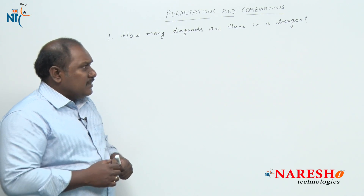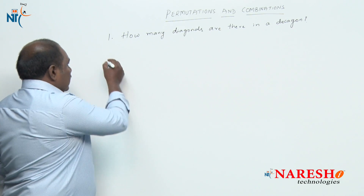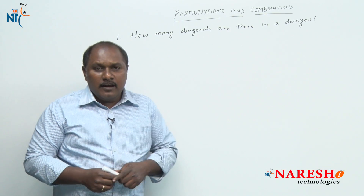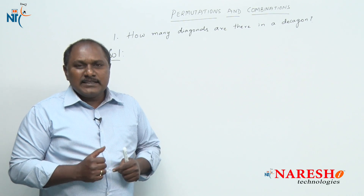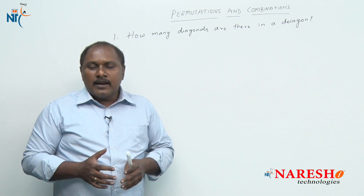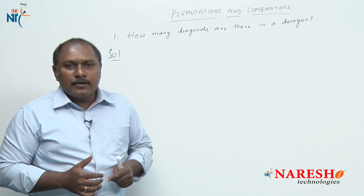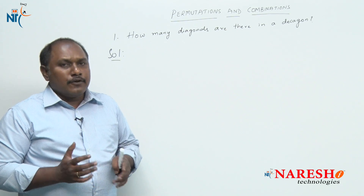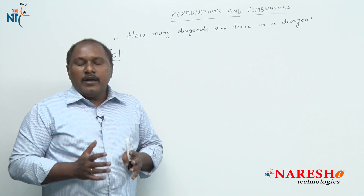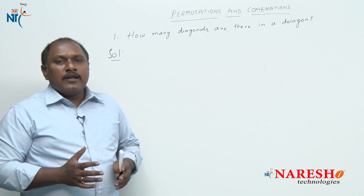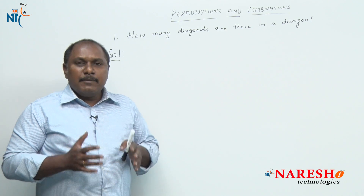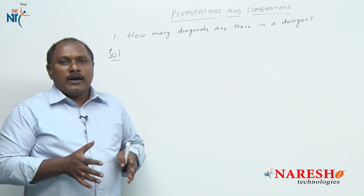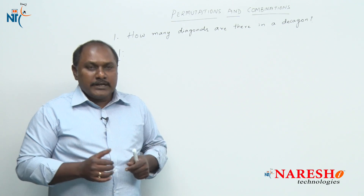There are different ways to answer this question. Let us look into the basics. A triangle is a polygon with three sides — to draw a triangle, we require three non-collinear points. Similarly, a quadrilateral is a polygon with four sides, requiring four non-collinear points. Likewise, a pentagon is a polygon with five sides, and to construct a pentagon, we require five non-collinear points.